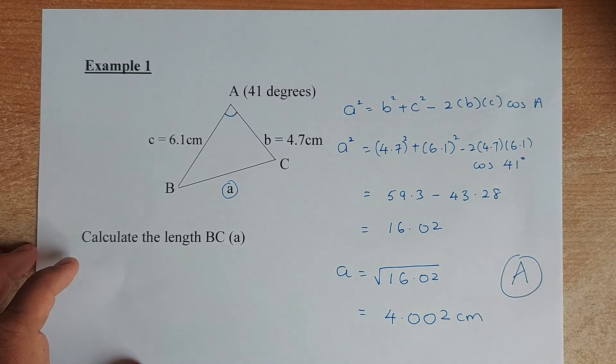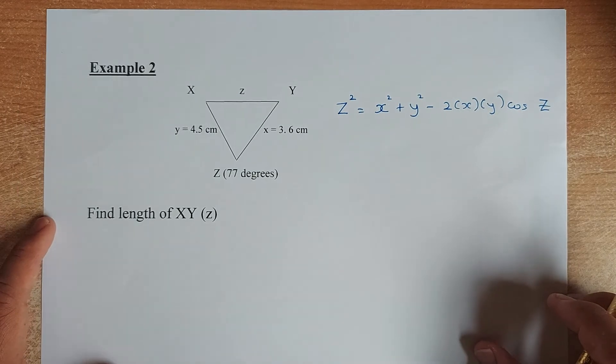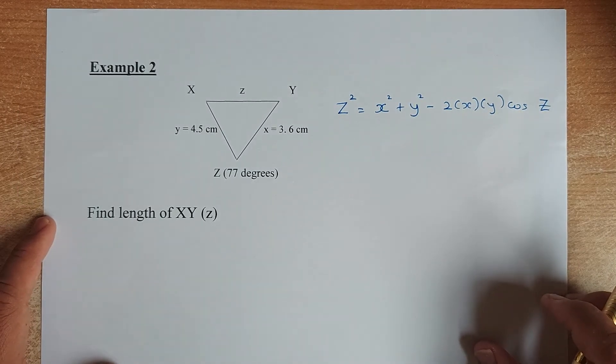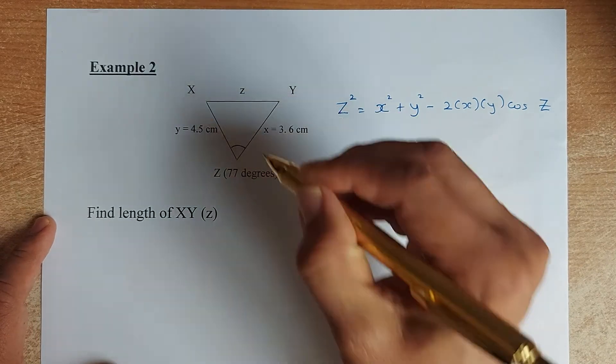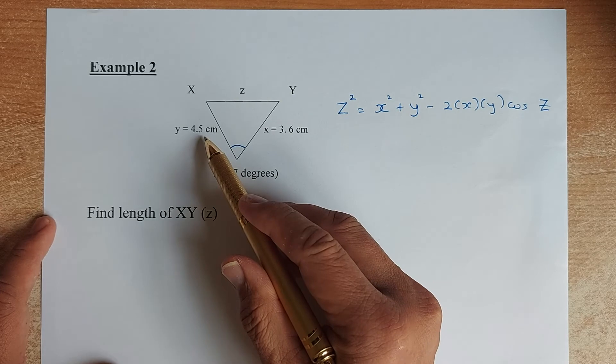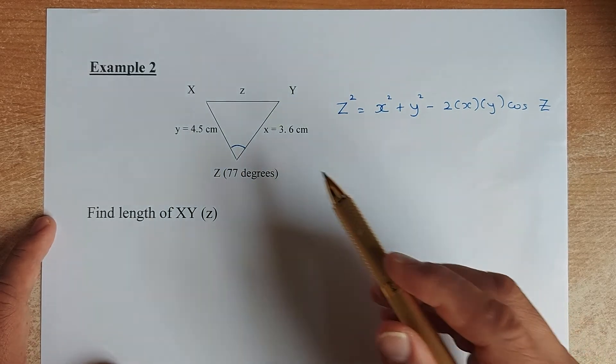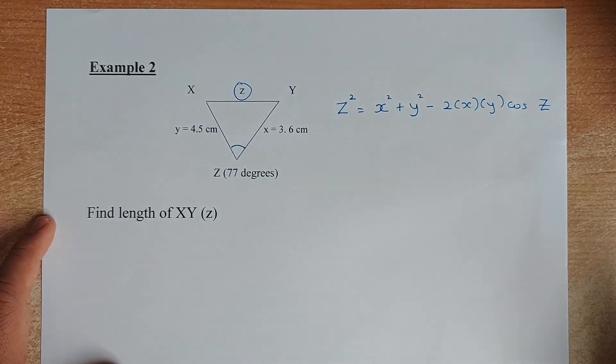Not too bad, isn't it? Great. Now we are looking at the second example. The second example, same triangle. I mean slightly different triangle with different numbers. So we know that the angle here, angle Z is 77. The length y is 4.5 and the length x is 3.6. So we are going to find the length z.